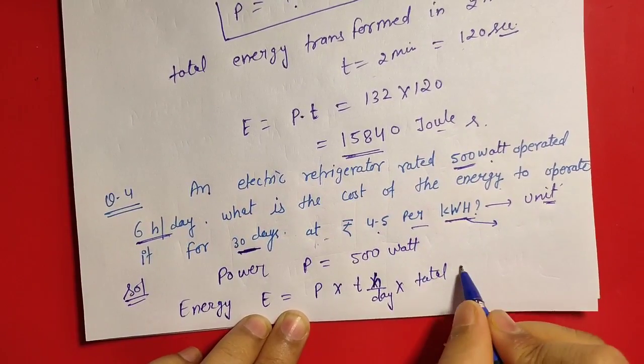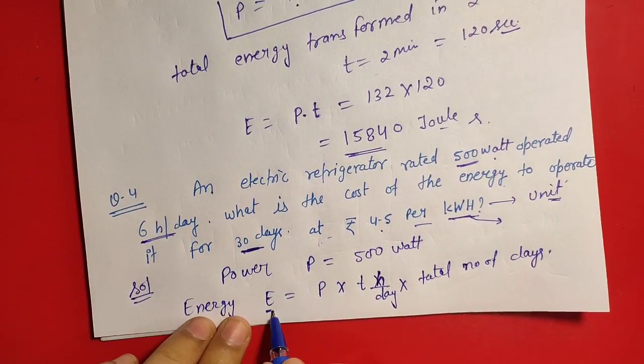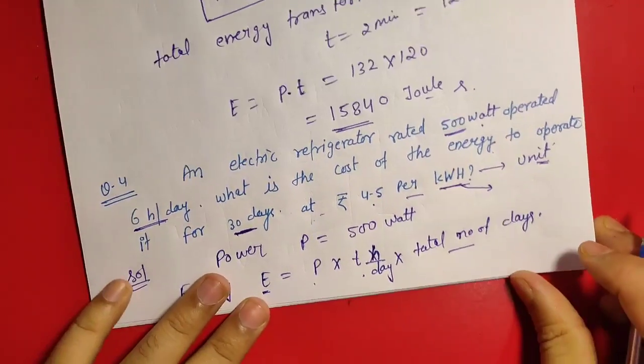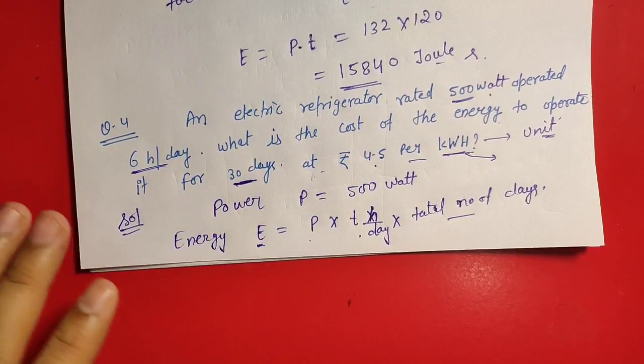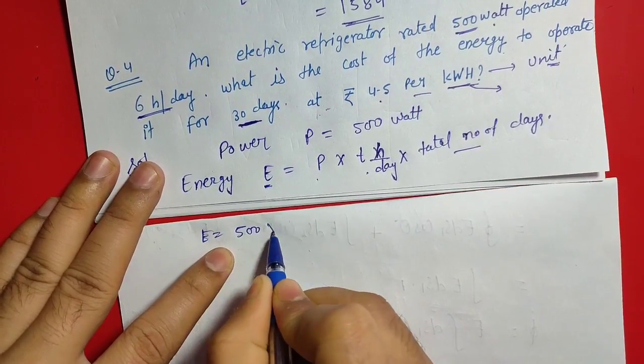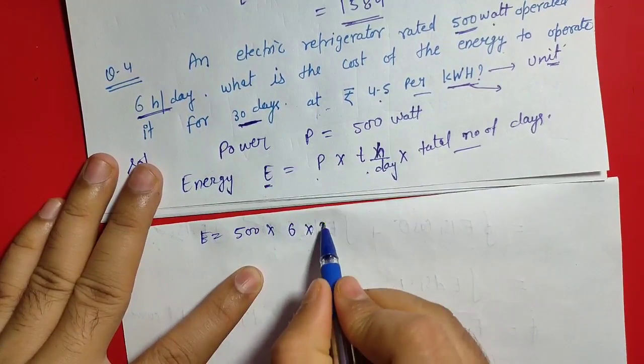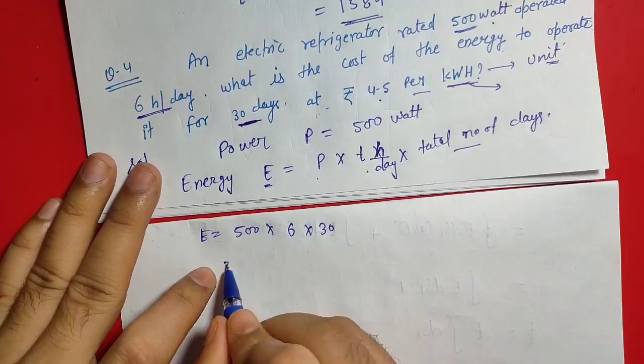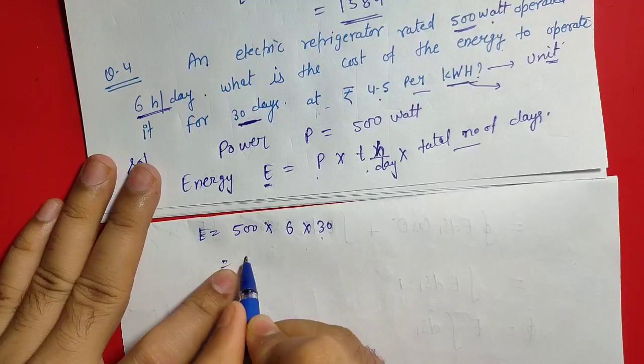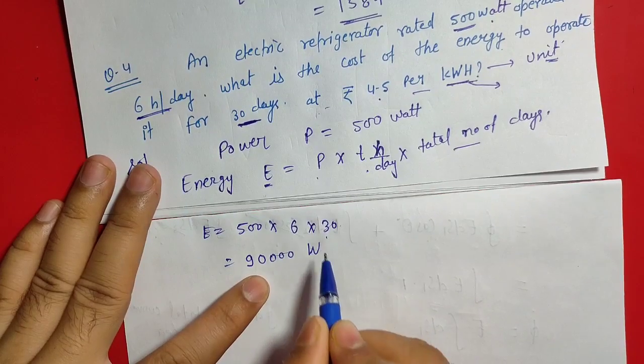Total energy consumption, total energy consumed, power multiplied by hours per day and total number of days to operate. Now that is equal to E is equal to power is 500 into kitne hours use hote hain, 6 hours use hote hain, 6 into kitne days tak use karte hain, isko 30 days tak use karte hain. That is equal to, multiply karenge, 6, 5, 30, 30 and 3 ke multiply karenge 9. Yeh jagah 91, 2, 3, aur yeh jagah 3, 0 watt hours.